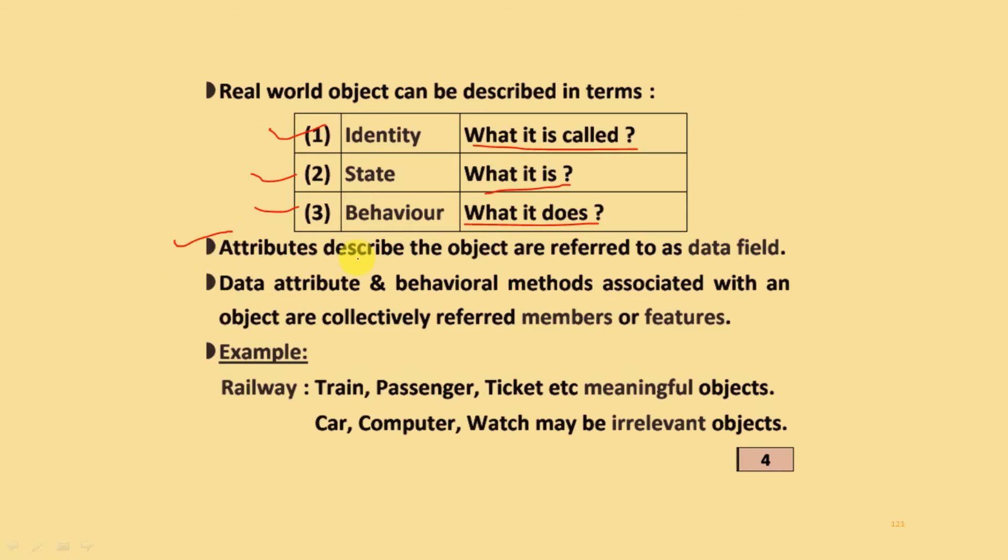Attributes describe the objects and are referred to as data fields. Data attributes and behavioral methods associated with an object are collectively referred to as members or features. Here, one example is given related with railway. If you create a railway-related application, train, passengers, tickets are meaningful objects, while car, computer, or watch may be irrelevant objects.